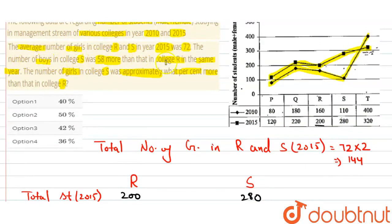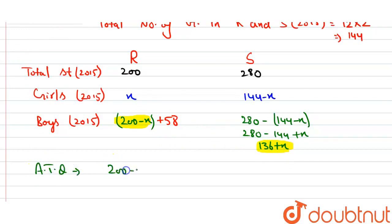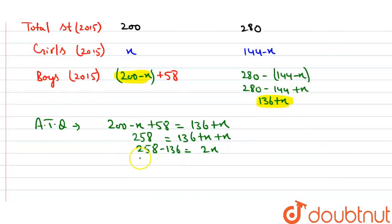We are given that boys in college S were 58 more than in college R. So: (200 − x) + 58 = 136 + x. This gives 258 − x = 136 + x, so 258 − 136 = 2x, meaning 122 = 2x, therefore x = 61.